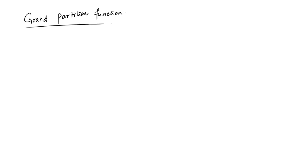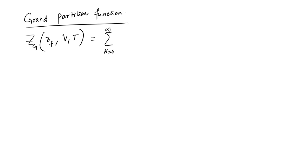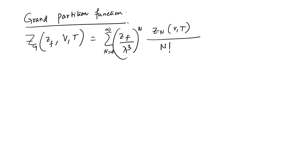It is easier to write the grand partition function because it factorizes more simply. The grand partition function Z_G is written in terms of fugacity z_f = exp(βμ), summed from N=0 to infinity as Σ_N (z_f/λ³)^N · Z_N(V,T)/N!.